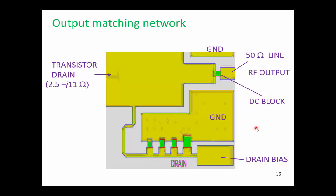The output matching network, we cannot use as simple a matching network. Because from the transistor, looking into the drain of the transistor, we see an impedance of 2.5 minus J11 ohms.